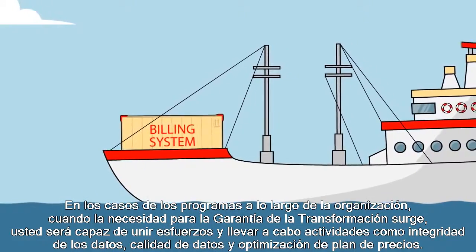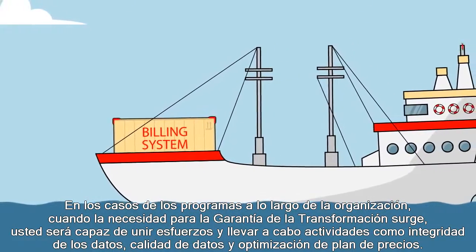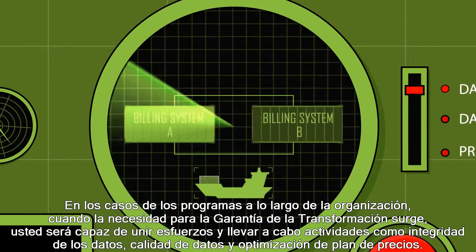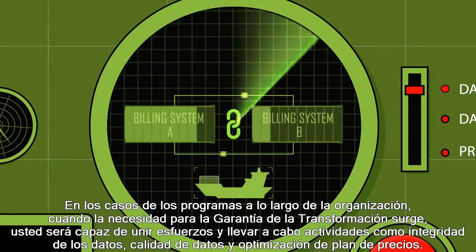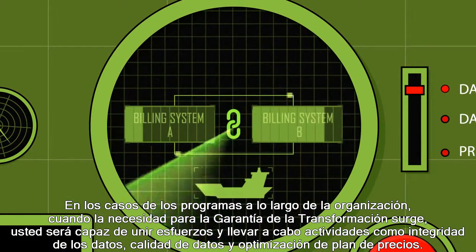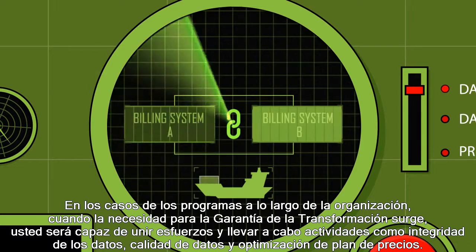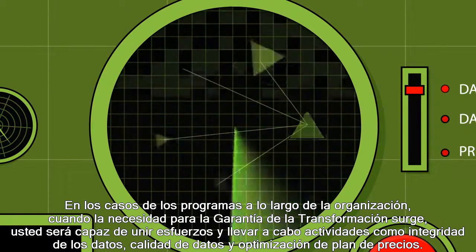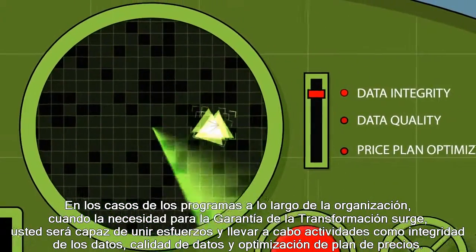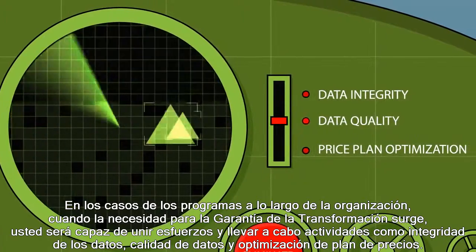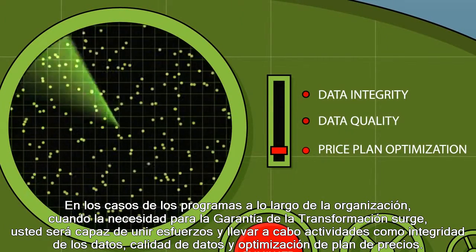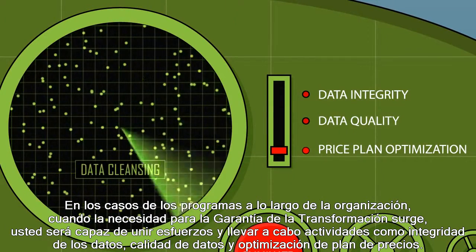In cases of cross-organizational programs, when the need for transformation assurance arises, you'll be able to join hands and perform activities such as data integrity, data quality and price plan optimization.